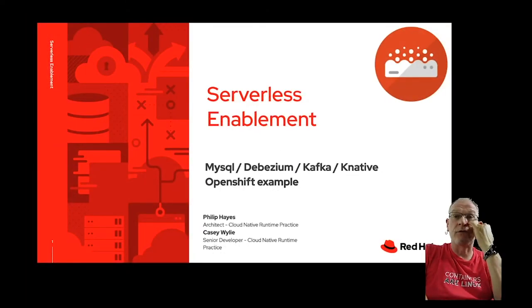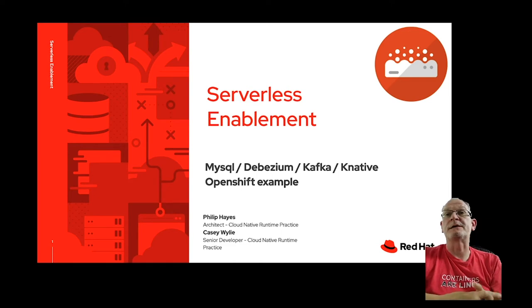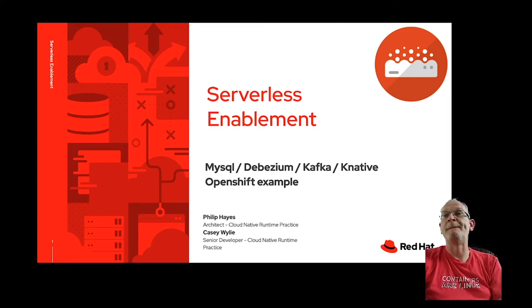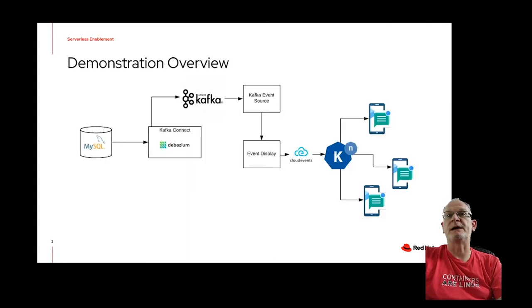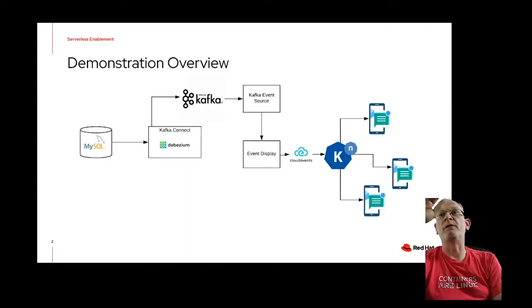Today we're going to go through MySQL and Debezium integration, showing how we can publish messages on a Kafka topic from changes to a MySQL table. Once we get those messages on the Kafka topic, we're then going to trigger a Knative Node.js application from those messages.